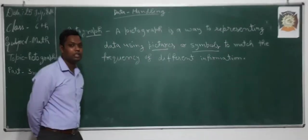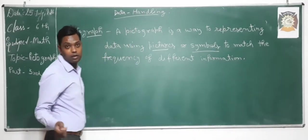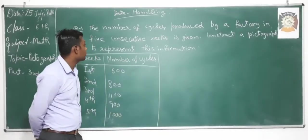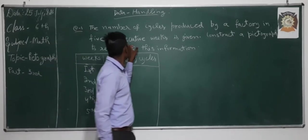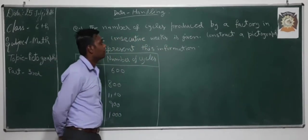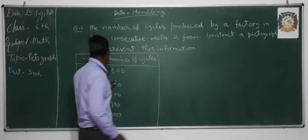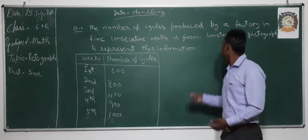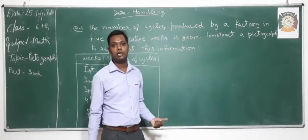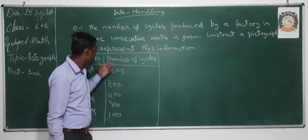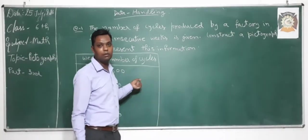In the next topic we consider an example. Let us consider the first question. The number of cycles produced by a factory in 5 consecutive weeks is given. This is the data — the 5 weeks are given along with the number of cycles produced per week. We have to represent this data in the form of a pictogram, that is, in the form of pictures or symbols, instead of numerical form.